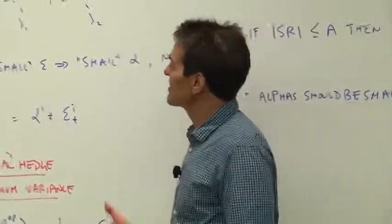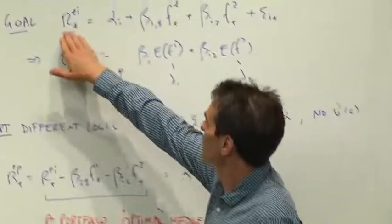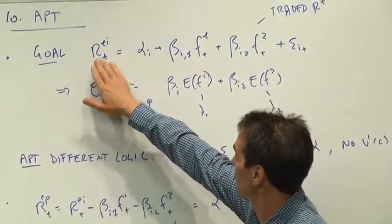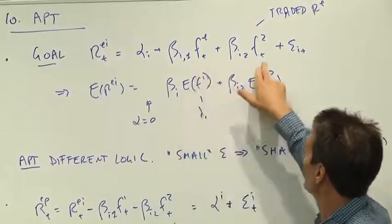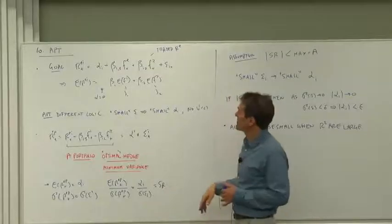So, the goal of the arbitrage pricing theory is the same goal. Let's run a regression of a return on two factors in this case. And to make life simple,